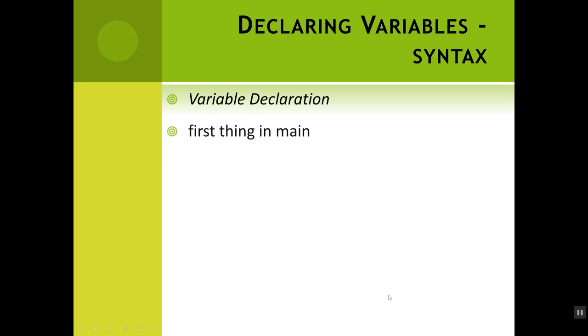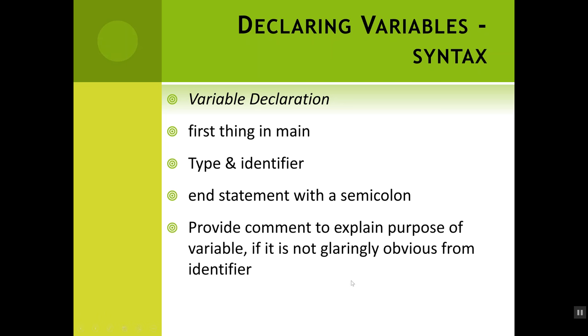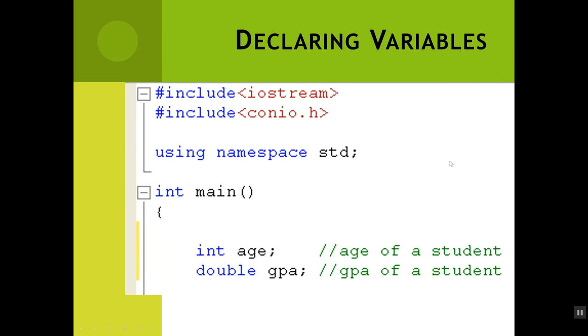Here's what it looks like when you declare a variable. If you're running a short program, it's probably going to be the first thing inside main. Otherwise you can declare it right before you need it as you're going through your code. You need to type the type and the identifier, and it's actually a statement when you declare, so you need to end it with a semicolon. If the name of the variable is not obvious, which remember it should be, then you can also provide a comment to explain the purpose of it. I've got a variable int age and double GPA. If I were really writing this program, I would not need to comment these because it's obvious what these two things hold. These words are very obvious, so we don't technically need these comments.